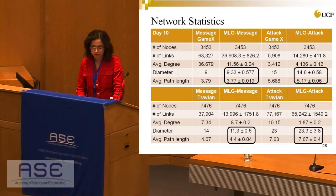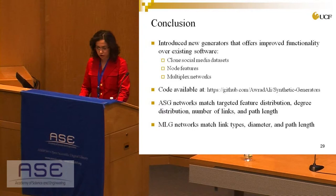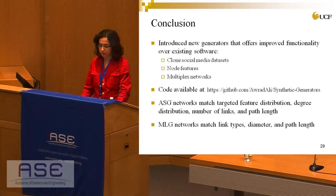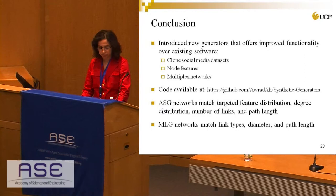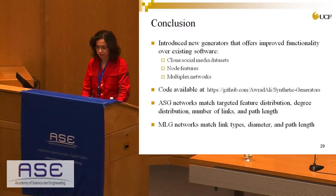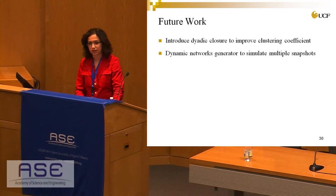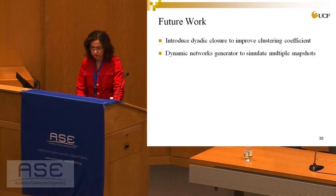In conclusion, we introduced new generators offering important functionality beyond existing software. They were able to clone social media datasets as seen in the fitness function results. We used node features to connect nodes and support multiplex networks. Our code is available on GitHub. ASG matched the feature distribution, degree distribution, number of links, and path length; the MLG network matched link type, diameter, and path length. For future work, we plan to introduce dyadic closure, which we believe will improve clustering coefficient, and develop a dynamic network generator to simulate multiple snapshots.